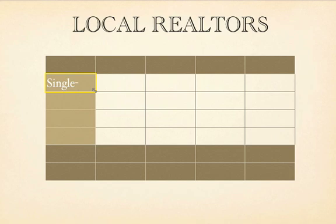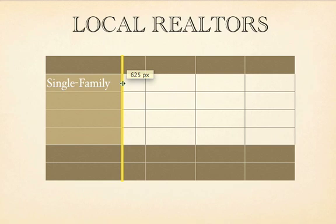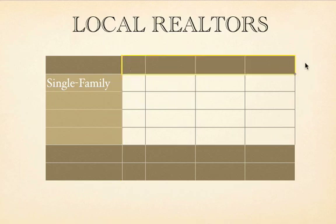If your data doesn't fit, you can resize rows or columns by dragging any of the cell borders. You can also apply the same cell size to any group of cells. Just shift-click on the cells you want to change, then go to the Table Inspector and enter a value in the column width or row height boxes, and then press Enter.